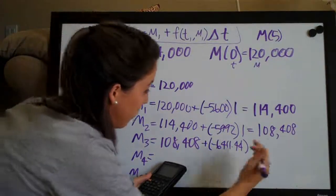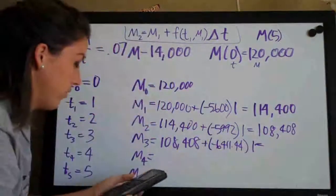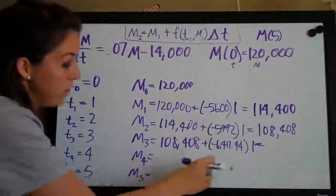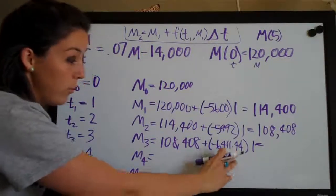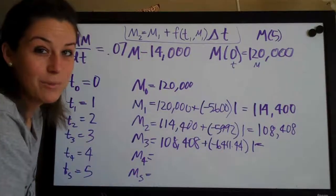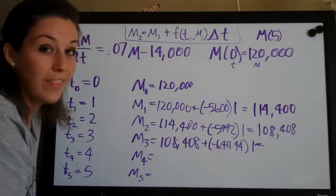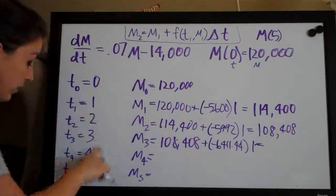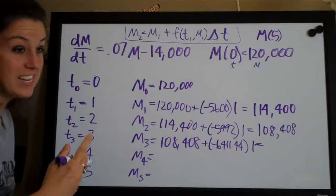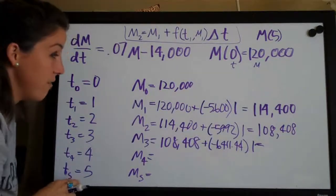So negative 6411.44 times 1 equals... And here's just a note, whenever you're doing Euler's method and you get decimal points, I don't care if there's nine decimal points, try to write them all down. Keep as many decimal points as you possibly can, especially if you have a lot of steps, if you're finding t10 or something like that.